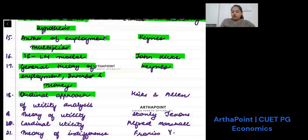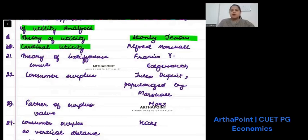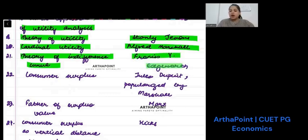Ordinal approach of utility analysis was given by Hicks and Allen. The theory of utility was given by Stanley Jevons. Cardinal utility was given by Alfred Marshall. Theory of indifference curve was initially propounded by Francis Y. Edgeworth. But in many MCQs, you may not find Edgeworth, so you may have to mark Hicks.